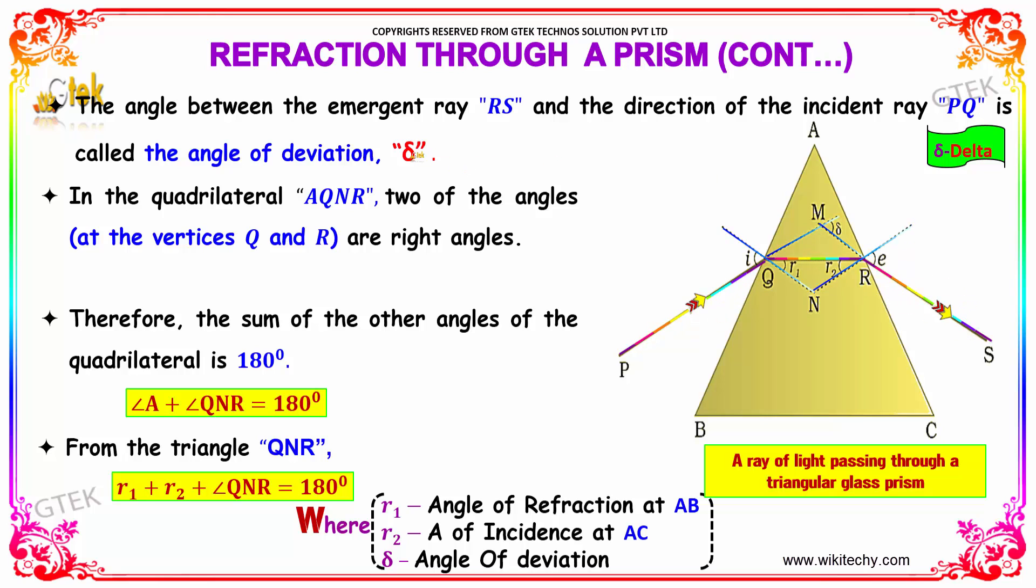In the quadrilateral AQNR, two of the angles at the vertices Q and R are right angles. Therefore, the sum of the other angles of the quadrilateral is 180 degrees.